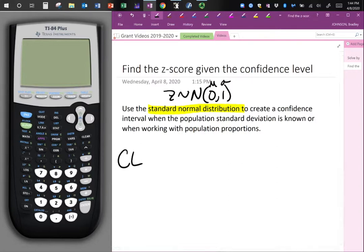Now we can use the standard normal distribution to create a confidence interval when the population standard deviation is known or when you're working with population proportions. So in any case, with proportions or when you're working with population standard deviation related to the population mean, we will use z-scores.